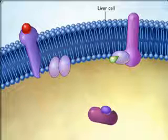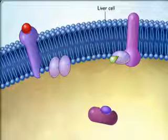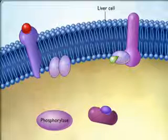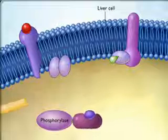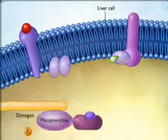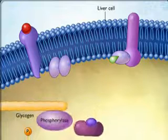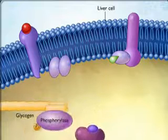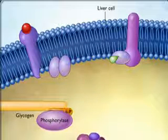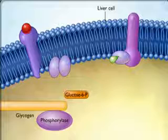In liver cells, protein kinase A phosphorylates and thereby activates another enzyme called phosphorylase, which converts glycogen into glucose-6-phosphate. The glucose-6-phosphate is then converted to glucose.